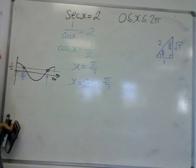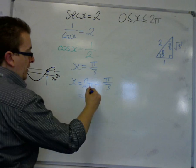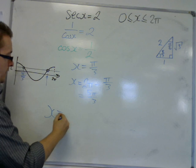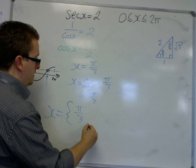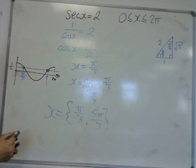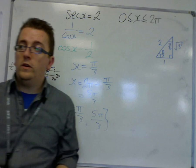Now 2π is 6π over 3, so that's 5π over 3. The two solutions for x is π over 3 and 5π over 3, and that's how we solve this basic starter question on trig.